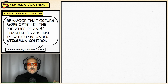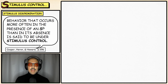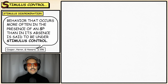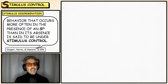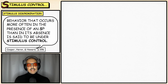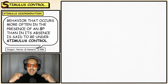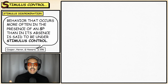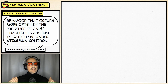Let's begin with stimulus discrimination. Cooper, Heron, and Heward mentioned that behavior that occurs more often in the presence of a discriminative stimulus than in its absence is said to be under stimulus control. You'll notice I did not say 'SD' — I said the entire phrase. You should get into the habit of doing this, especially in the early going, because when you say 'discriminative stimulus,' you know you're dealing with a stimulus and with discrimination, and it'll help you understand the material so much better.